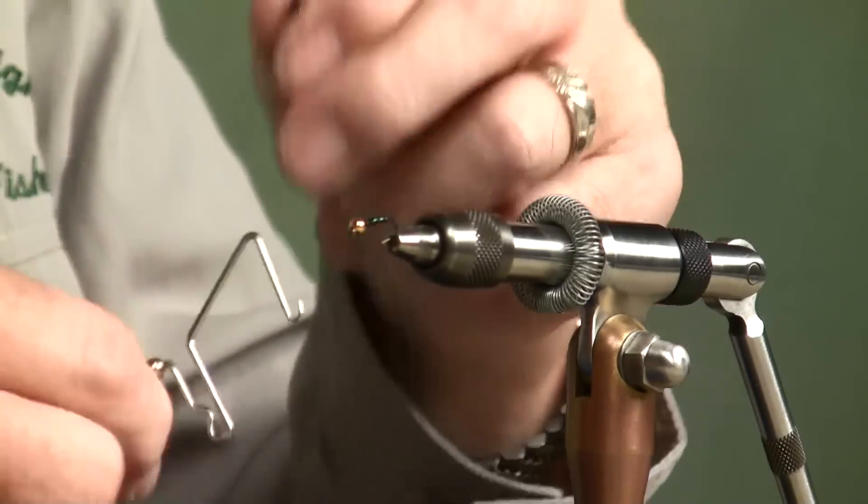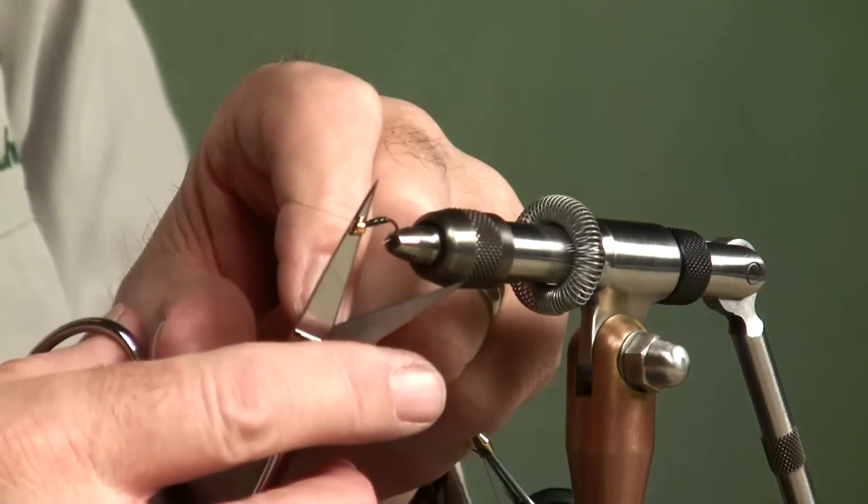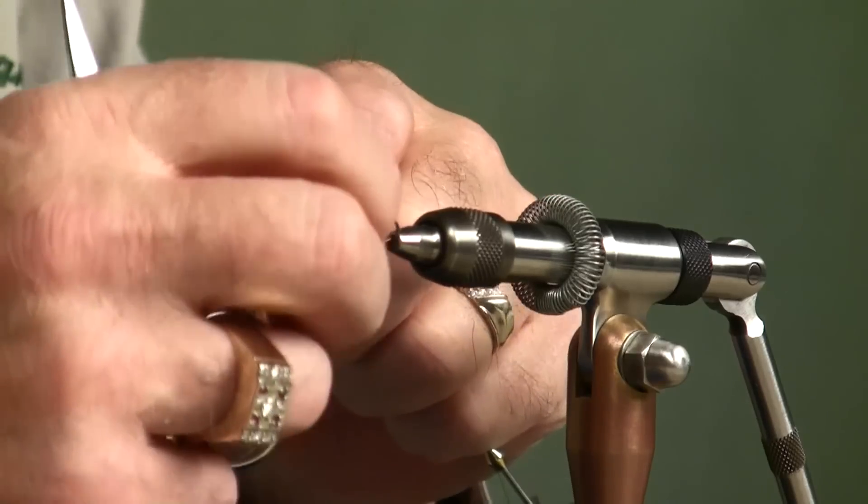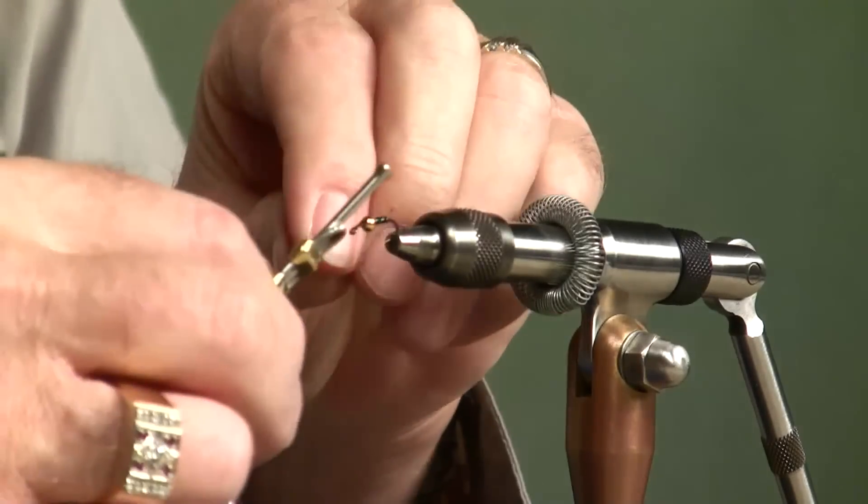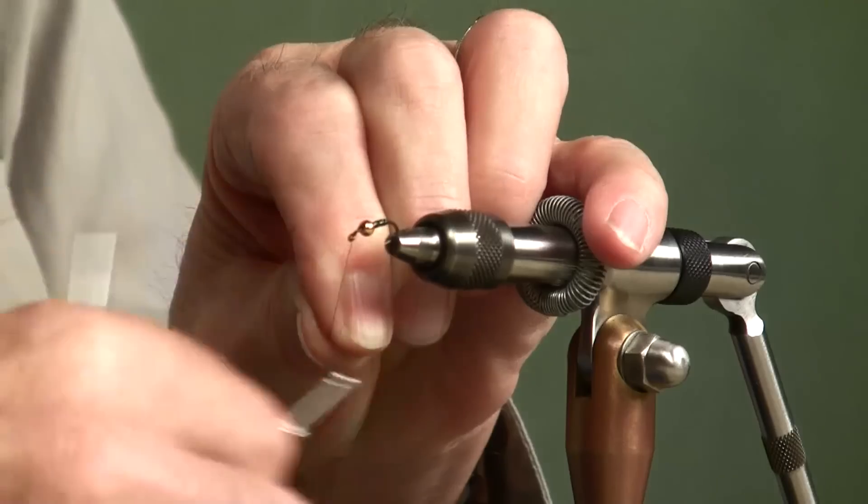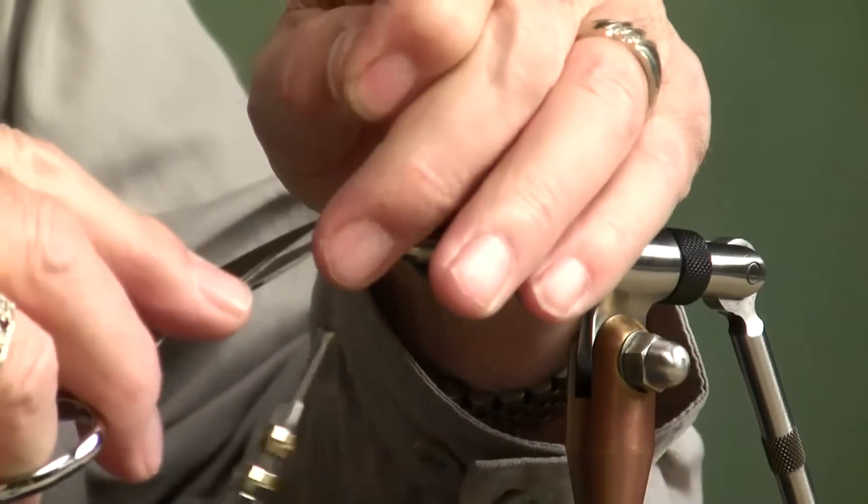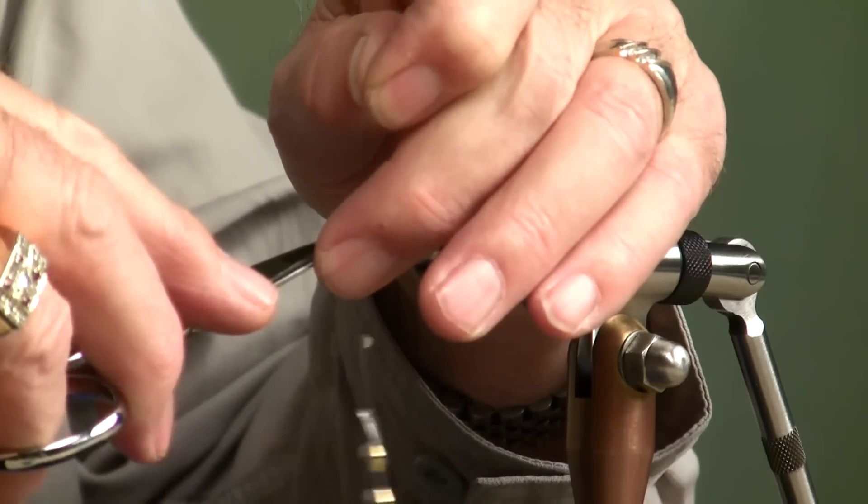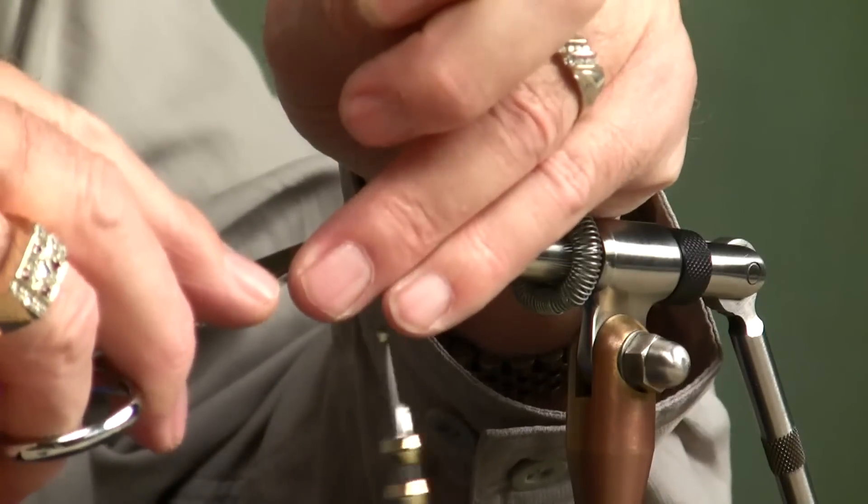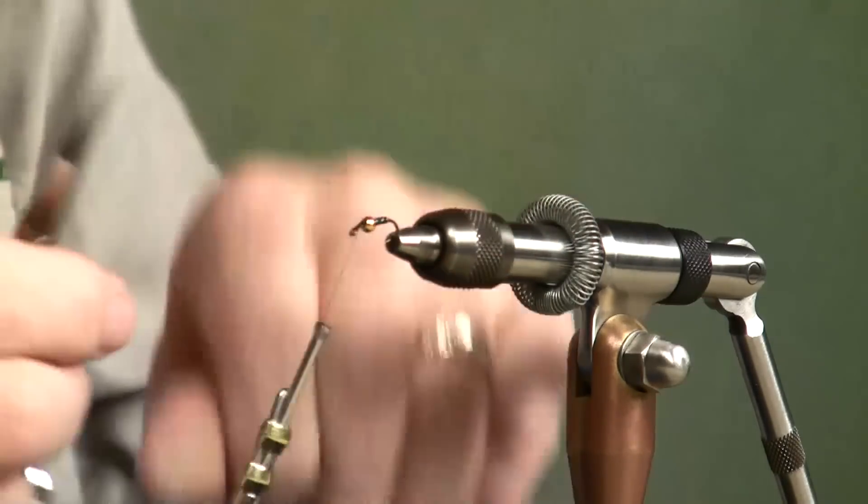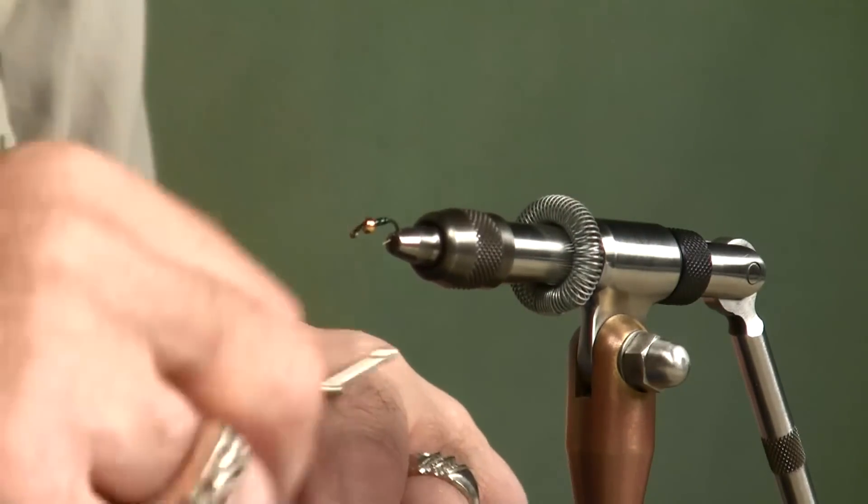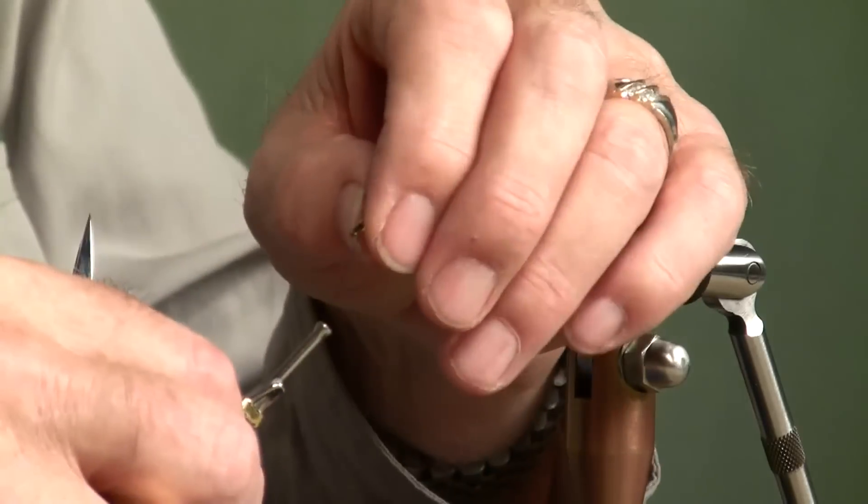Three, four, five wraps. That's all you need. Get rid of the thread and shove that bead to the rear. Start your tying thread again. Get it on the hook. And come back almost to the bead.